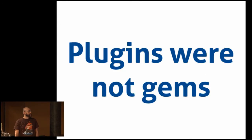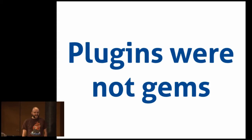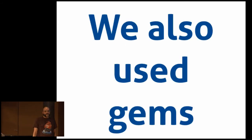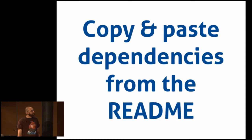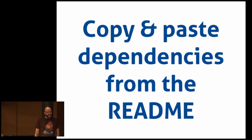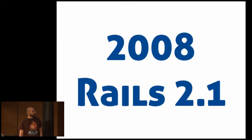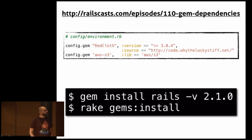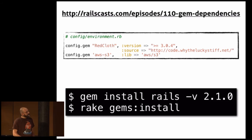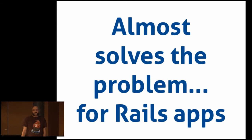Before Rails 2.1, we didn't use gems for plugins — we just copied them as files and managed dependencies by hand. We still needed some gems for XML parsing, image manipulation, and that sort of thing. When you wanted to install a Rails app, you would hopefully copy dependencies from the readme, but sometimes the readme was basically empty and you'd just run it, see which failures you had, and add dependencies one by one. A couple years later they added per-environment dependencies, but you had to install the gem before you could install dependencies. It almost solved the problem, but only for Rails apps, with some really weird issues.